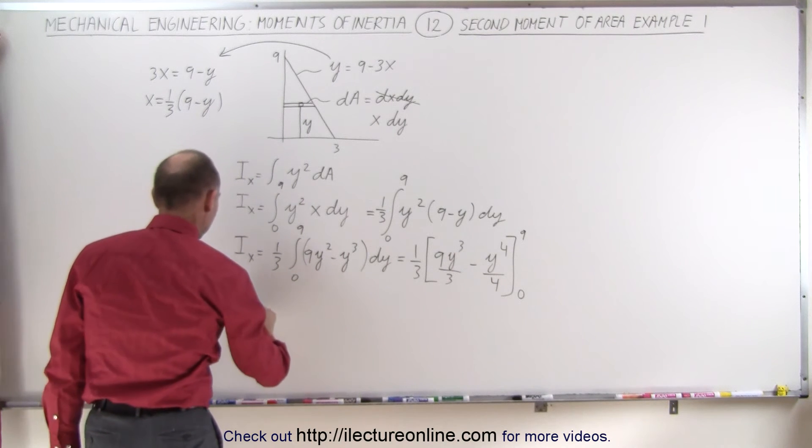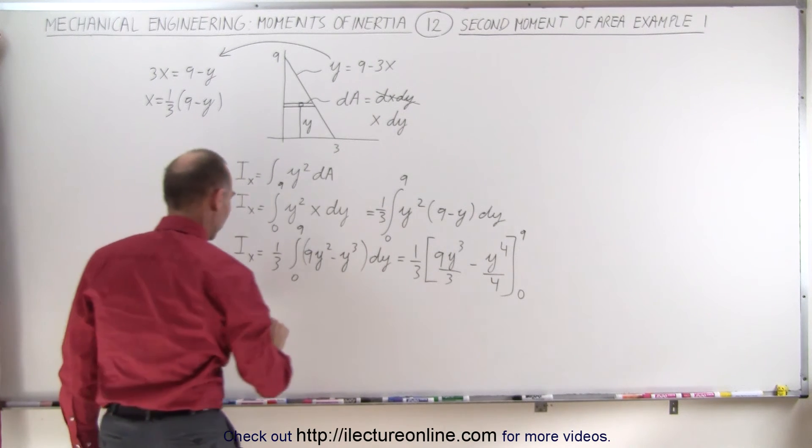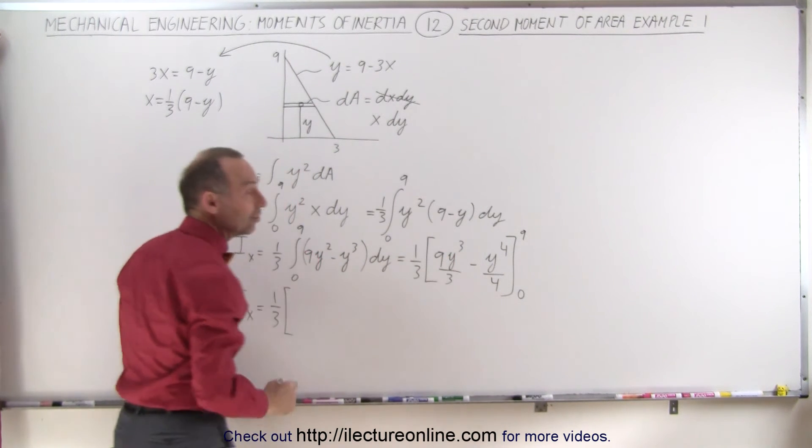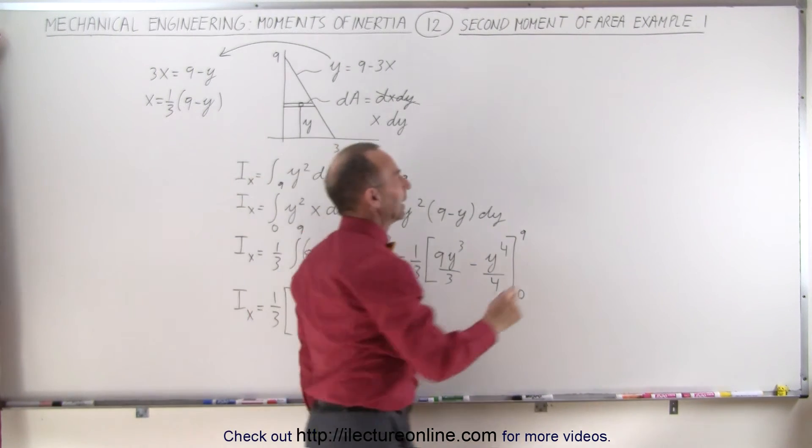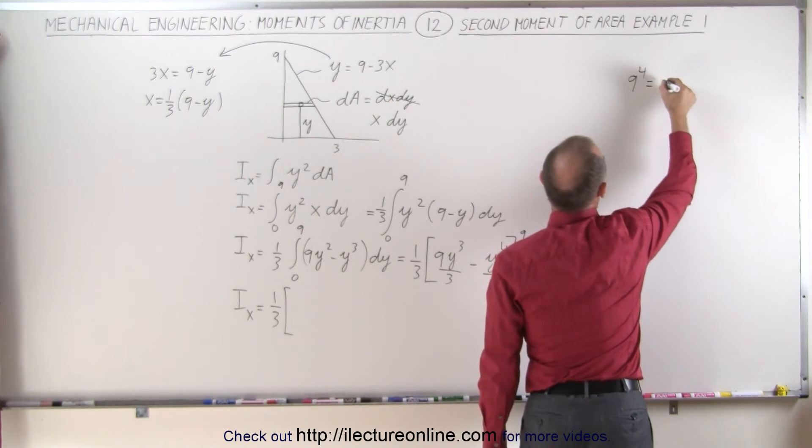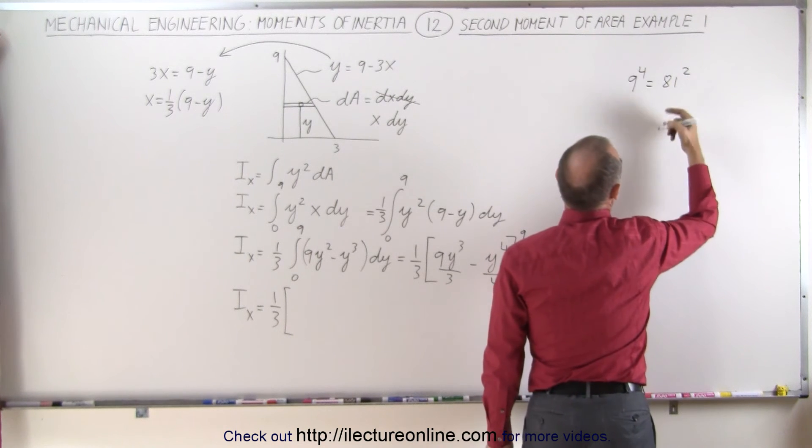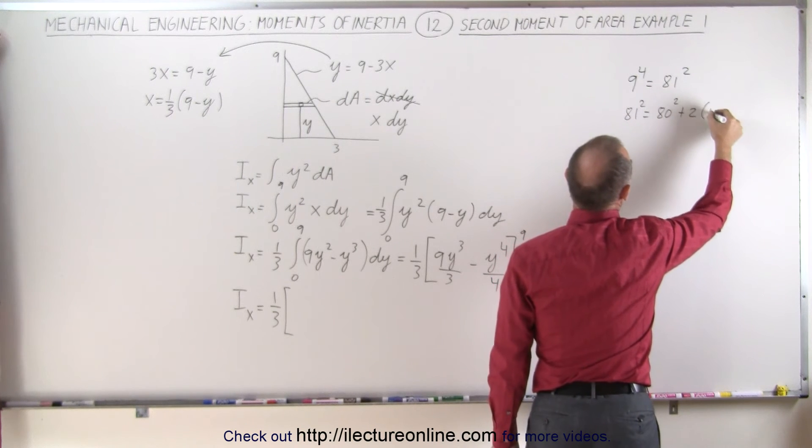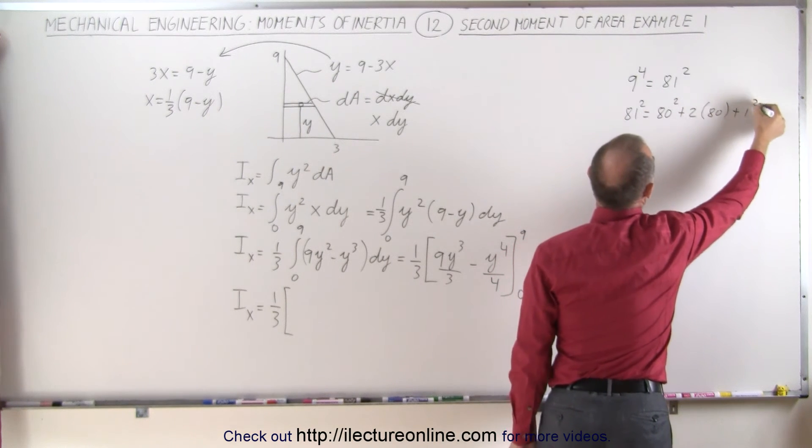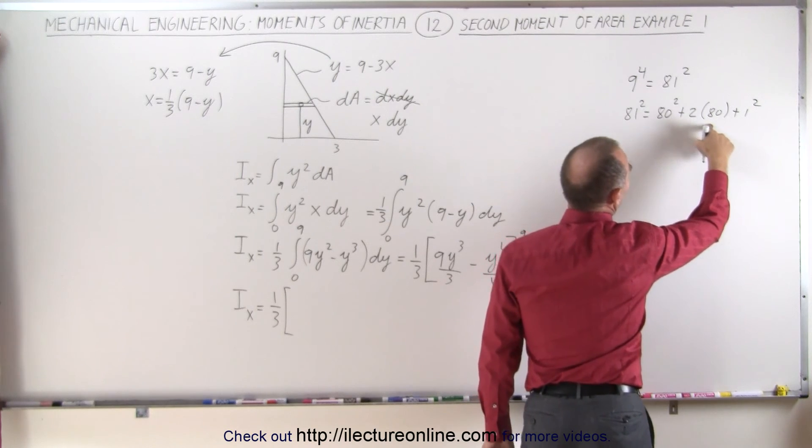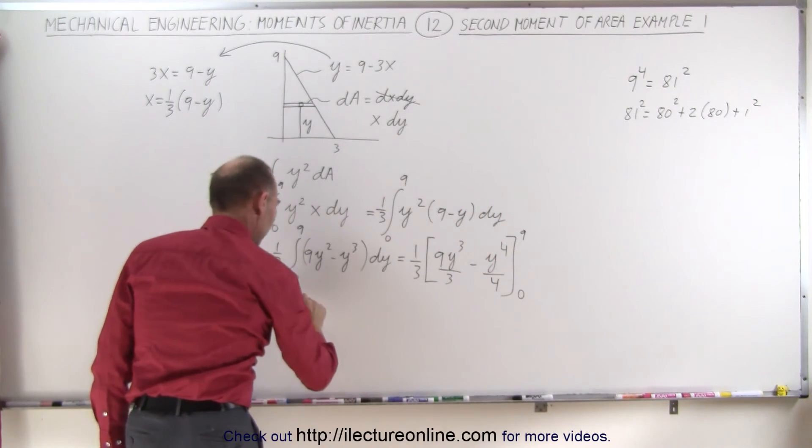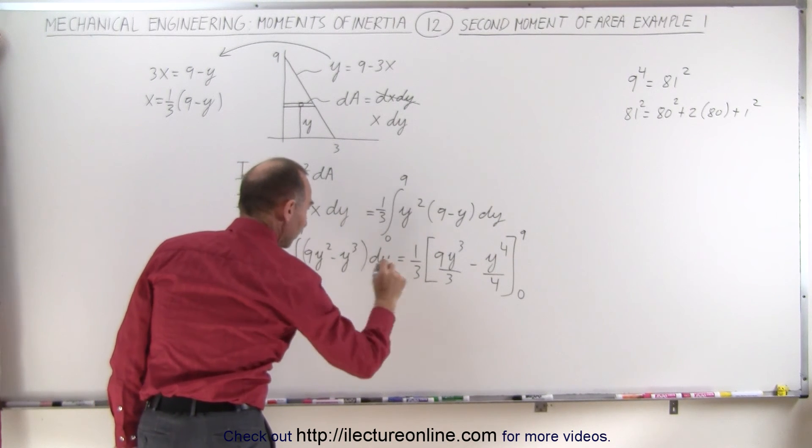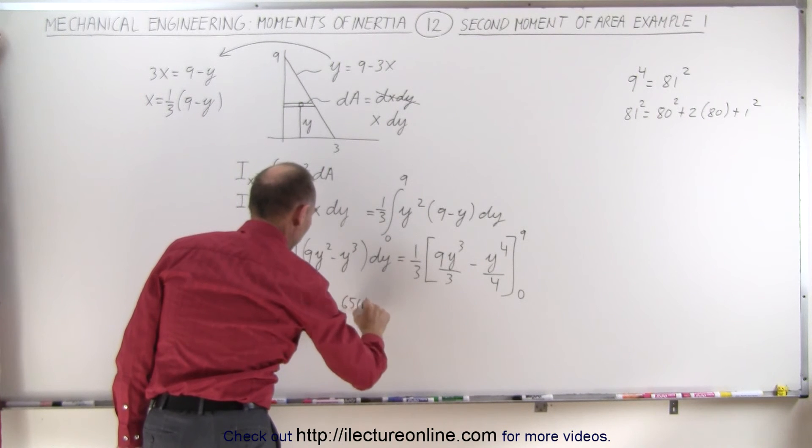So the second moment of area with respect to the x-axis is equal to one third times, plug in the upper limit we get 9 cubed times 9 which is 9 to the fourth power. Now 9 to the fourth power is equal to 81 squared, and 81 squared is equal to 80 squared plus twice the product of the two which is 80 plus 1 squared. That's 6400, that's 6560, that's 6561.